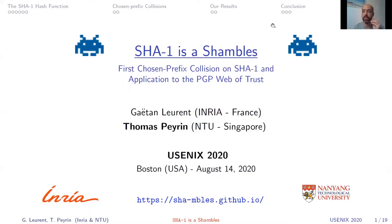Hello, my name is Thomas Perrin from NTU Singapore and this is a joint work with Gaëtan Laurent from INRIA in France. Our work is entitled 'SHA1 is a Shambles' and in this work we show the first chosen prefix collision on the SHA1 hash function and we give an application for this by attacking the PGP web of trust. We have a companion website at the bottom if you want more information about our work.